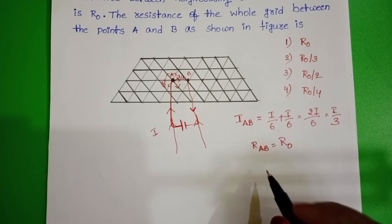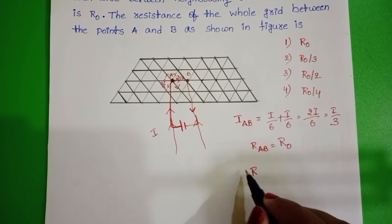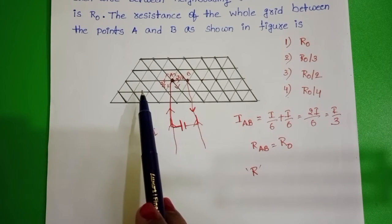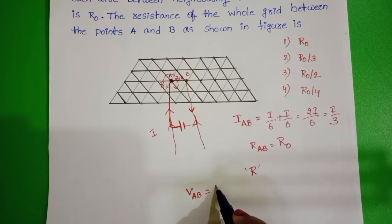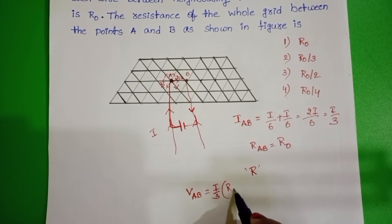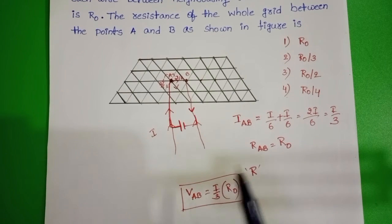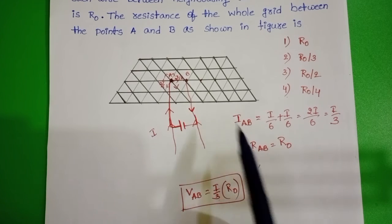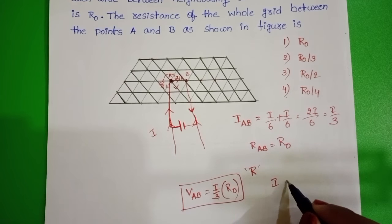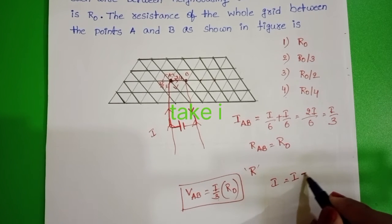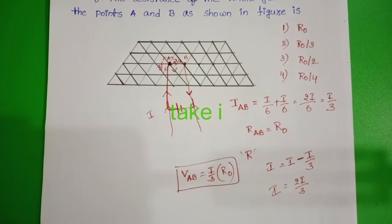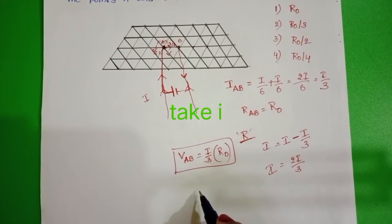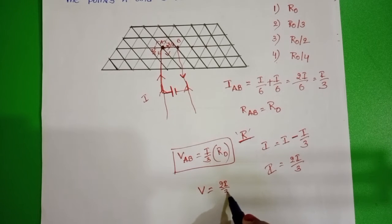Let us say the resistance of the remaining grid is R. The potential difference in between A and B — VAB — equals current I/3 multiplied by resistance R0, so VAB = (I/3)·R0. The current through the remaining circuit equals total current I minus the current between A and B, that is I minus I/3, which equals 2I/3. The potential of the remaining circuit V equals current 2I/3 multiplied by resistance R.